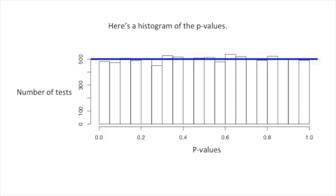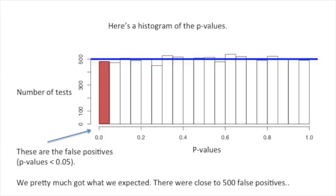Here's a histogram of the p-values. The blue line shows that each bin contains about 500 tests. These are the false positives, the tests with p-values less than 0.05. We pretty much got what we expected. There were close to 500 false positives.